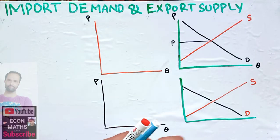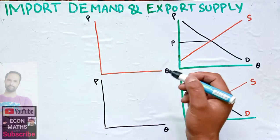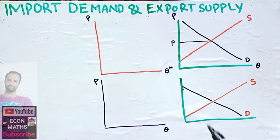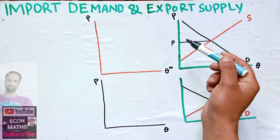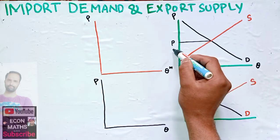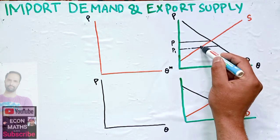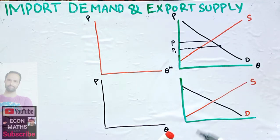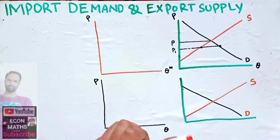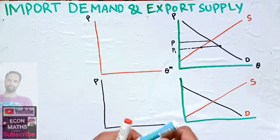To derive the import demand curve, I have drawn a second graph where the vertical axis has price and the horizontal axis has the quantity imported, denoted Q superscript M. Whenever the price is below the autarky price — say we have a price of P1 — our supply is less and demand is more, so this denotes excess demand, which can obviously be met by imports.